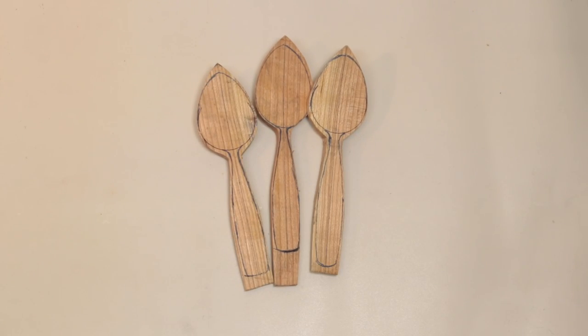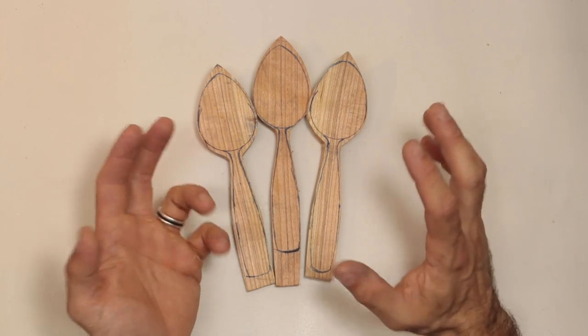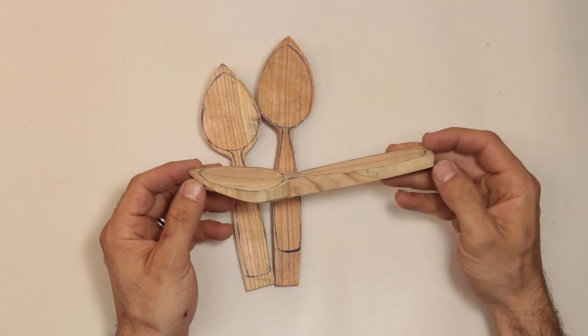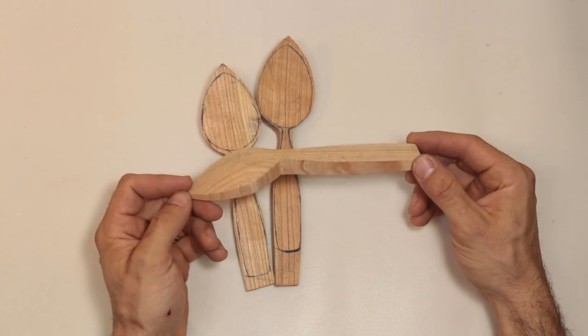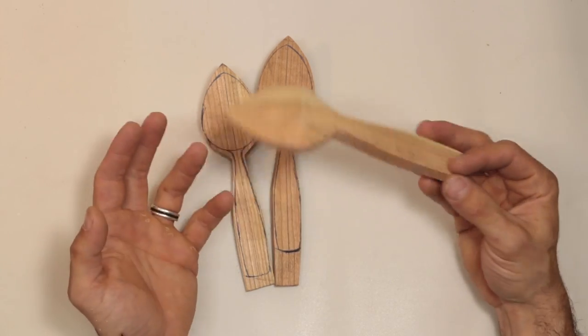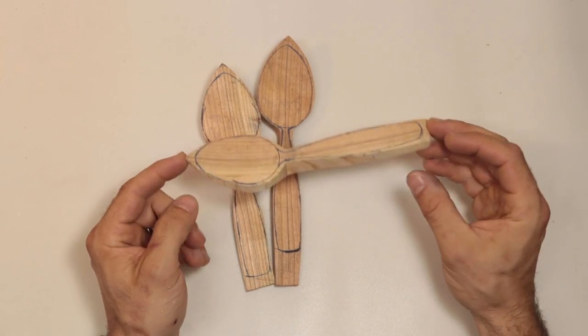If you get yourself some spoon blanks, then you can pretty much start carving. In my workshops, I've noticed that axe work and sourcing raw materials tend to be the main barriers towards people starting spoon carving. So getting some spoon blanks from a maker removes these barriers and gets you carving sooner. Eventually you want to be making these on your own.